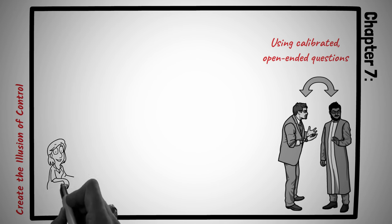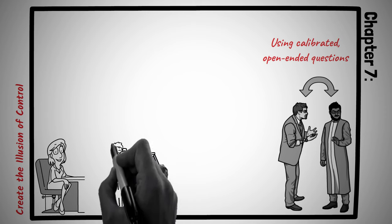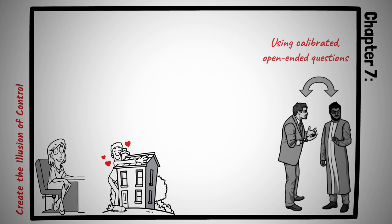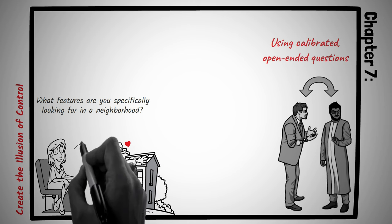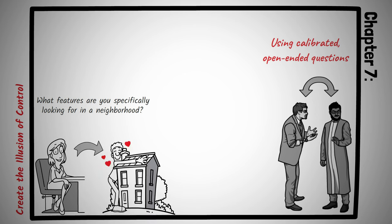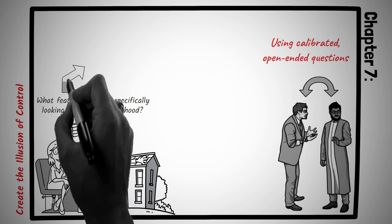Julia, a seasoned real estate agent, is showing a house to a couple who seem hesitant. They've expressed concerns about the neighborhood, although they love the property itself. Instead of directly addressing their worries or pushing the home's positive aspects, Julia turns the conversation by asking, What features are you specifically looking for in a neighborhood? The couple begins to list their desires. Parks, cafes, schools. Julia, recognizing this as an opportunity, replies, What if I showed you a nearby area with all these amenities? Would that make a difference in your decision? The couple, feeling in control and validated, agrees. By the end of the day, they're discussing potential offers. All because Julia skillfully created an illusion of control.